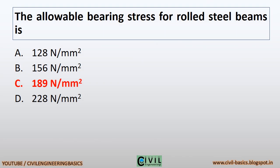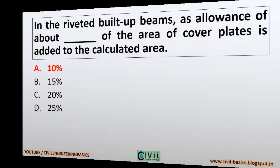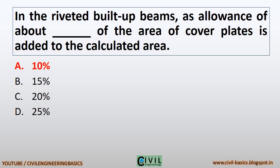The allowable bearing stress for rolled steel beams is 189 N/mm². In riveted built-up beams, an allowance of about 10% of the area of cover plates is added to the calculated area.